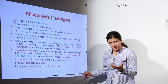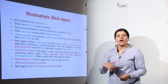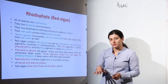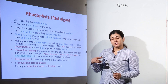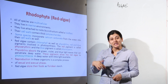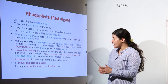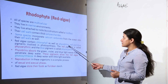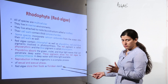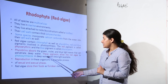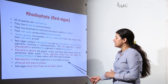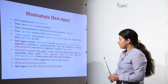If you encounter a question asking which algae would be present in the deepest oceans, the answer is red algae, because it absorbs those parts of the white spectrum — violet, green, and blue — that can penetrate deep into the water. These pigments allow red algae to photosynthesize in deep water with little light available.